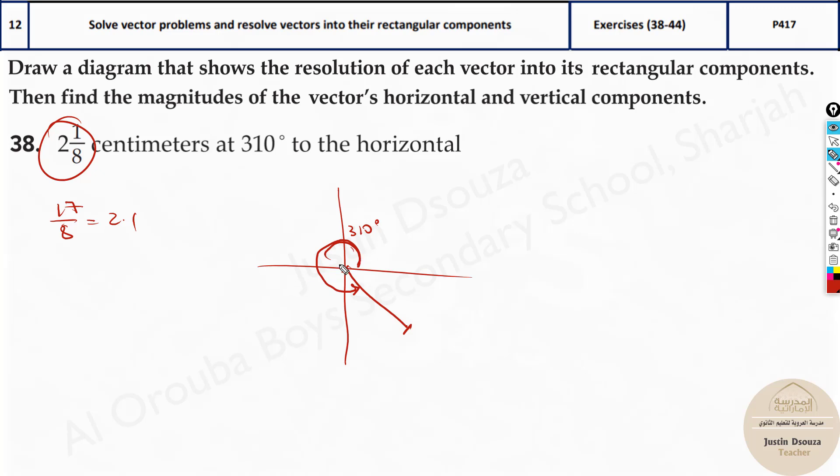And if you have to resolve this into the horizontal components, it will be this horizontal component and this is the vertical component. And these are given by the magnitude times sine theta. Over here, magnitude times cos theta. You must always remember the vertical component has sine, the horizontal component has cosine.